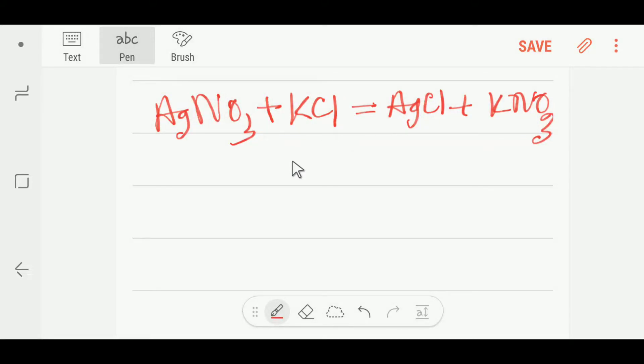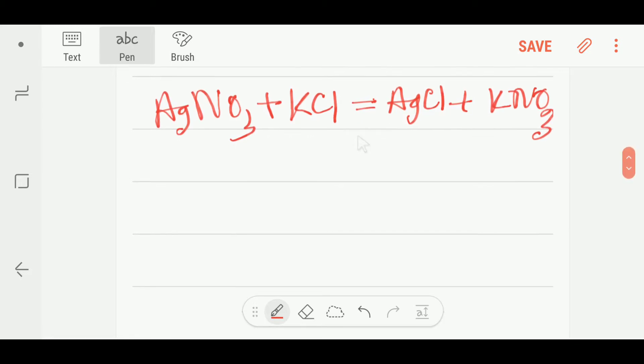Welcome to Chemistry Tutorial 360. This is silver nitrate, this is potassium chloride, this is silver chloride, and this is potassium nitrate. To balance this reaction, I can draw a table.